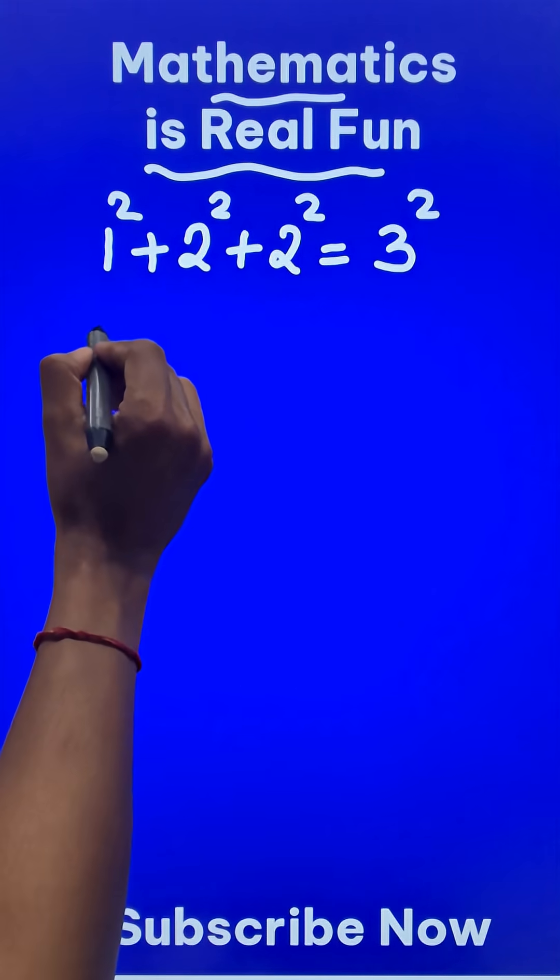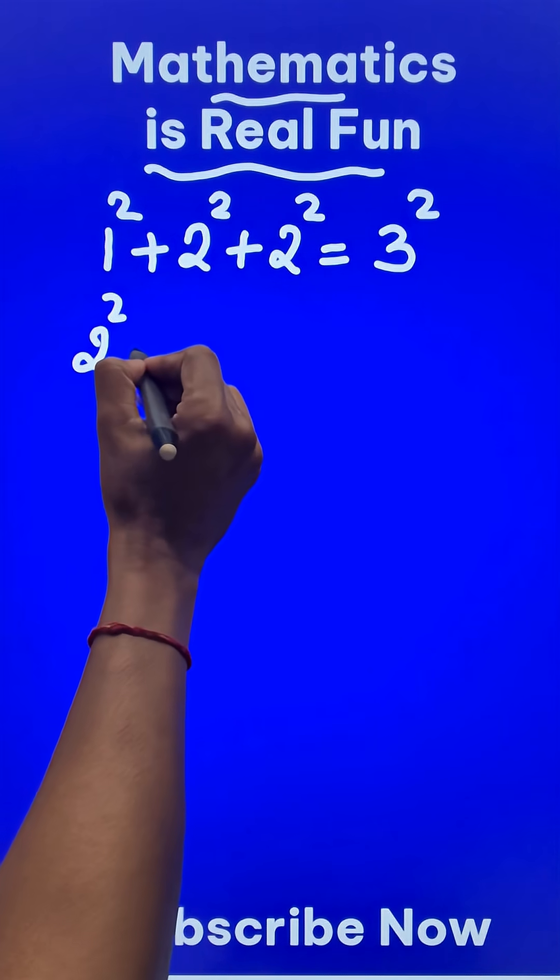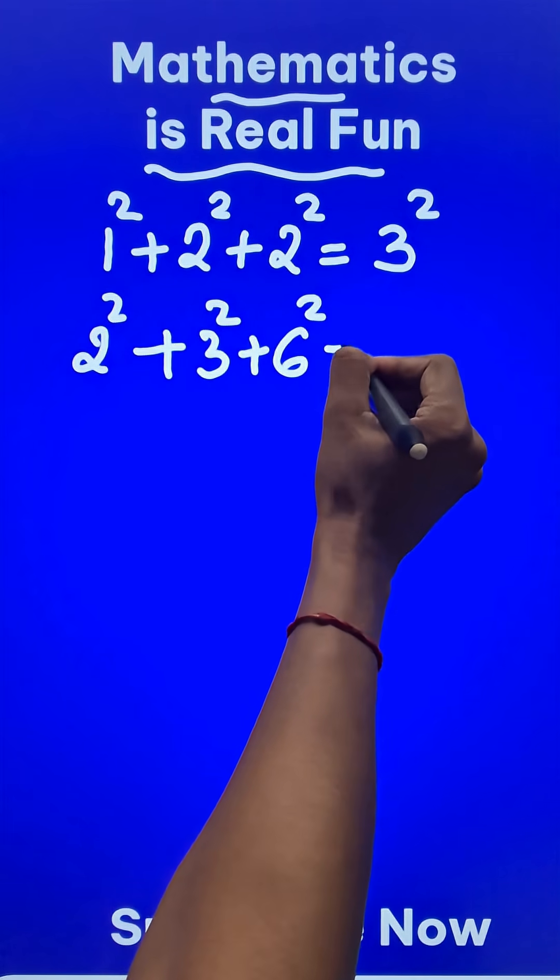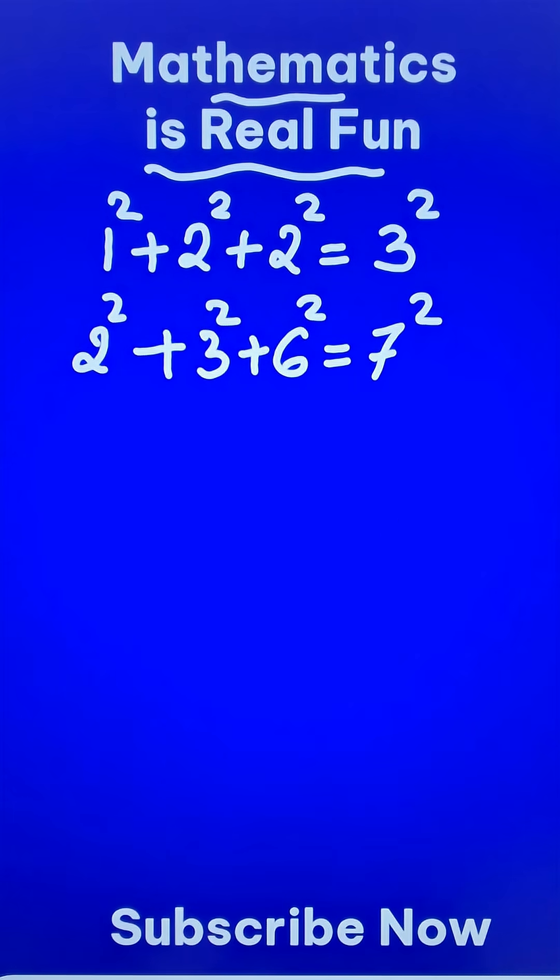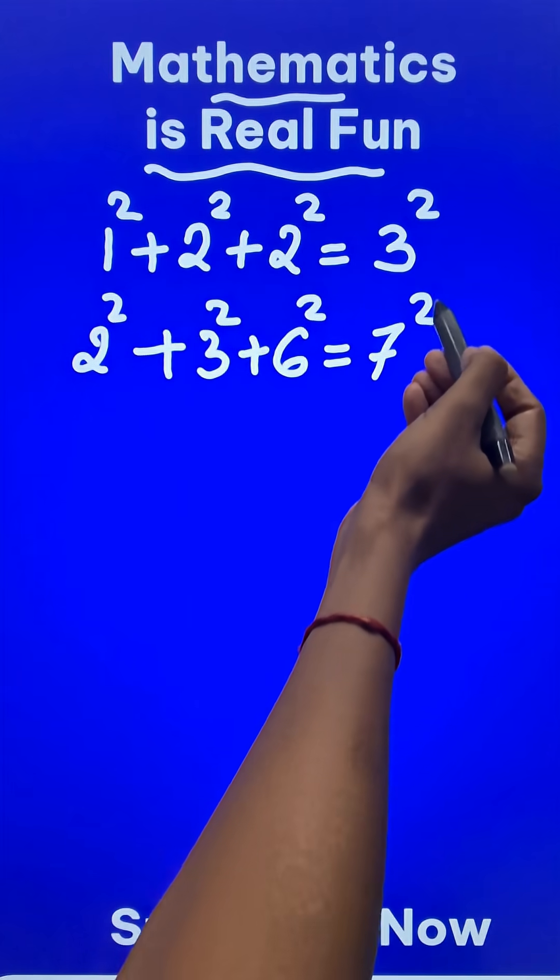Let's have one more pattern. 2 square plus 3 square plus 6 square. You will be surprised to know that this actually is 7 square. Can you find a pattern among these two?